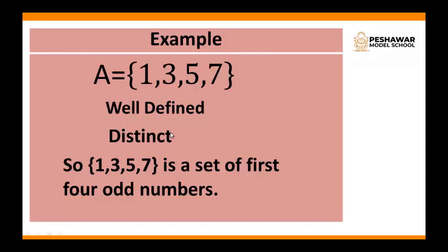Now apply the word distinct. You can clearly see that all these numbers are distinct. Why are these numbers distinct? Because these numbers are not identical. Means 1 is different from 3, 3 is different from 5, and 5 is different from 7. So A equals to {1, 3, 5, 7} is distinct.